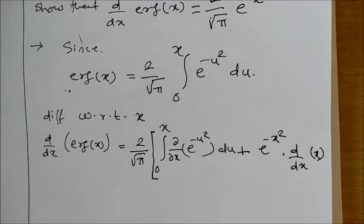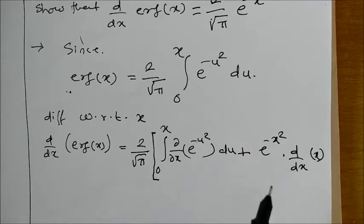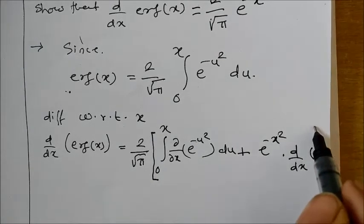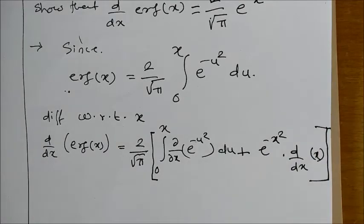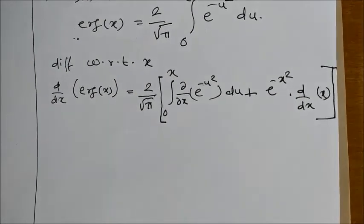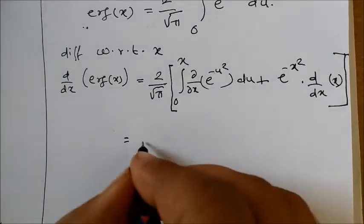minus - now the lower limit is constant, so that remaining part will disappear because the derivative of constant is 0. So now if we simplify this further, what we will get is 2/√π